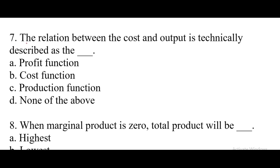Question number 7: The relation between the cost and output is technically described as the. Right answer option B, cost function.